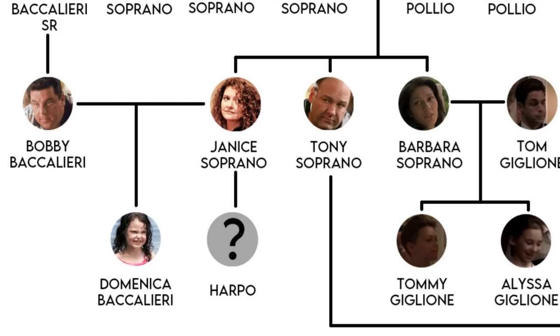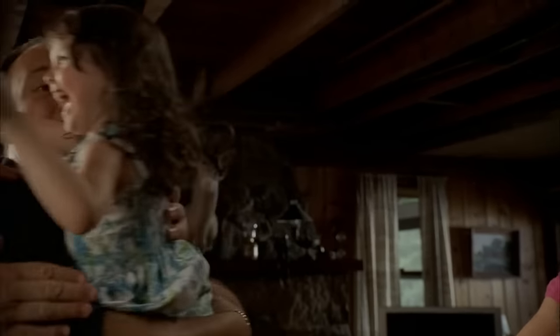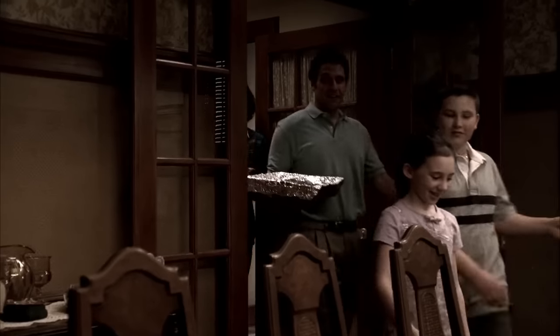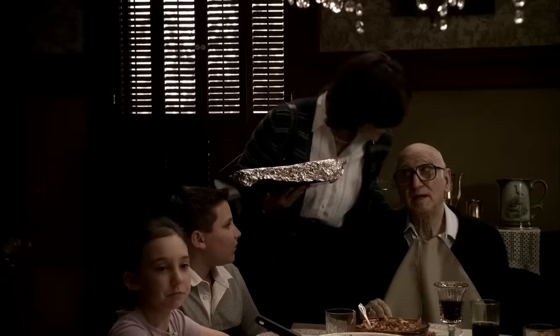Janice would have one son, Harpo — later named Hal — with a French-Canadian man named Eugene. We're never told a last name for him, so I left it blank. She would later marry Bobby Baccalieri, Junior's right-hand man, and have one daughter together, Domenica. Barbara would marry Tom Giglioni and have two kids, Tommy and Alyssa. They intentionally live far away in Brewster, so we only occasionally see them on the show. The only thing we know about Tom is that he works in the special effects industry for the movies.